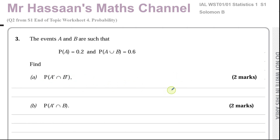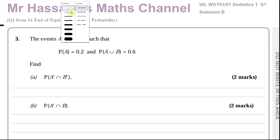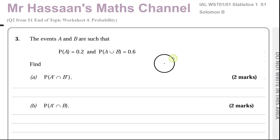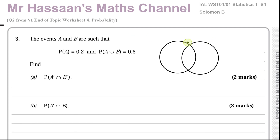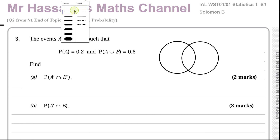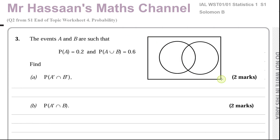There are lots of formulas we could use, but instead of memorizing formulae, if we picture what's happening first, I think that's far better. So what I'm going to do is draw a Venn diagram. I'll have my two circles, which I'm going to draw intersecting, and I'm going to draw a rectangle around them.